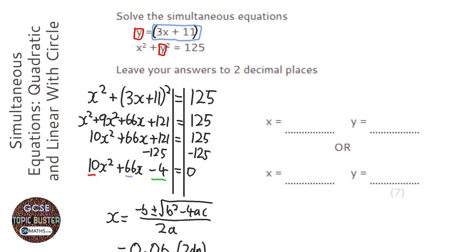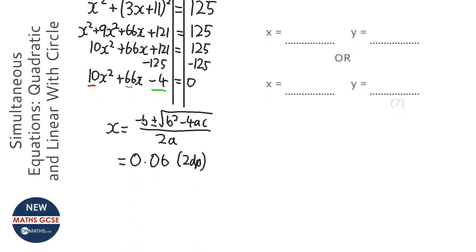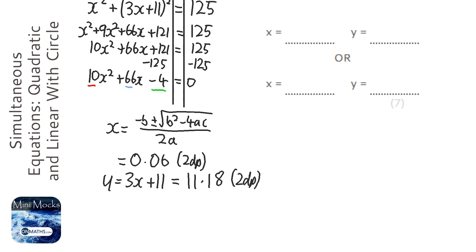Because what I'm going to do is I'm going to look at this equation. It tells me how to find y. It says y is 3x plus 11. So y equals 3x plus 11. So what I'm going to do is just times that by 3, and then plus 11. So that gives me 11.18 to two decimal places. So there's my first two solutions, 0.06 and 11.18.